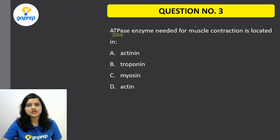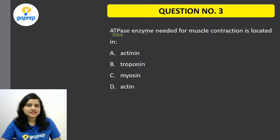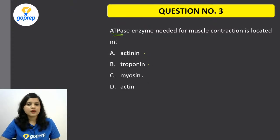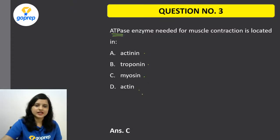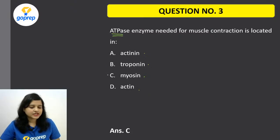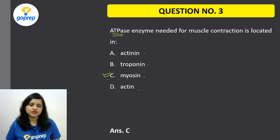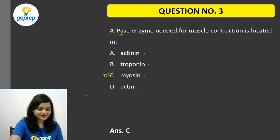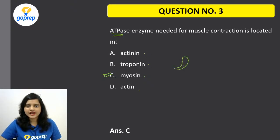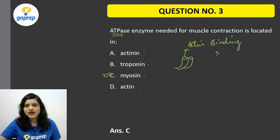Moving on to question number 3: ATPase enzyme needed for muscle contraction is located in — Actin, Troponin, Myosin, or Actin? The correct option is C — Myosin. If you remember the Myosin head diagram, it has an Actin binding site and an ATP binding site. Since ATP binds here, ATPase is present in the Myosin head.